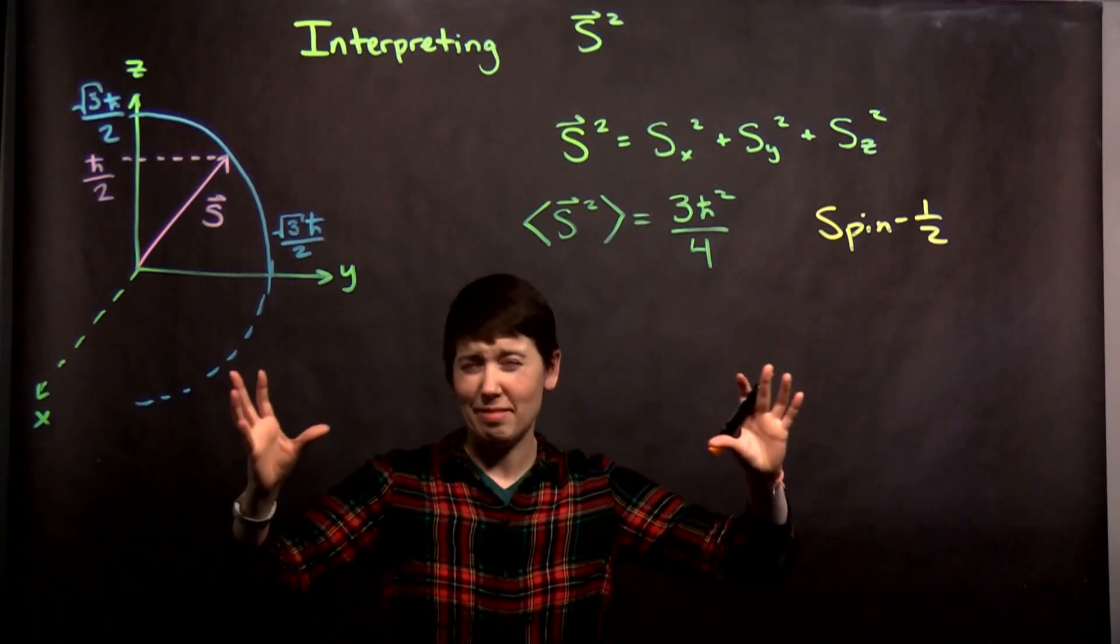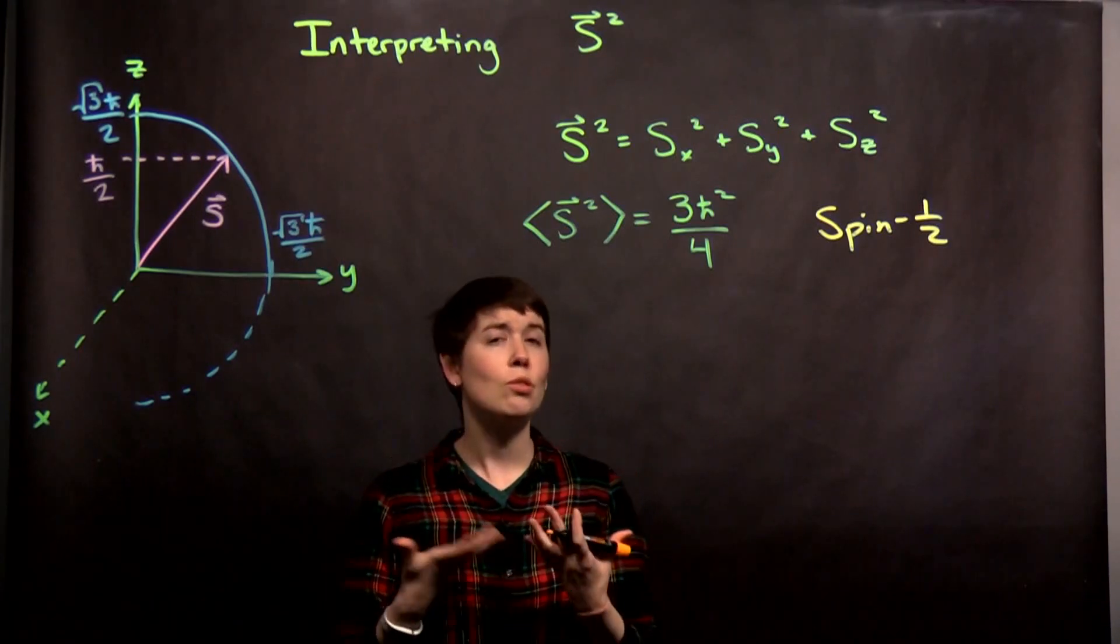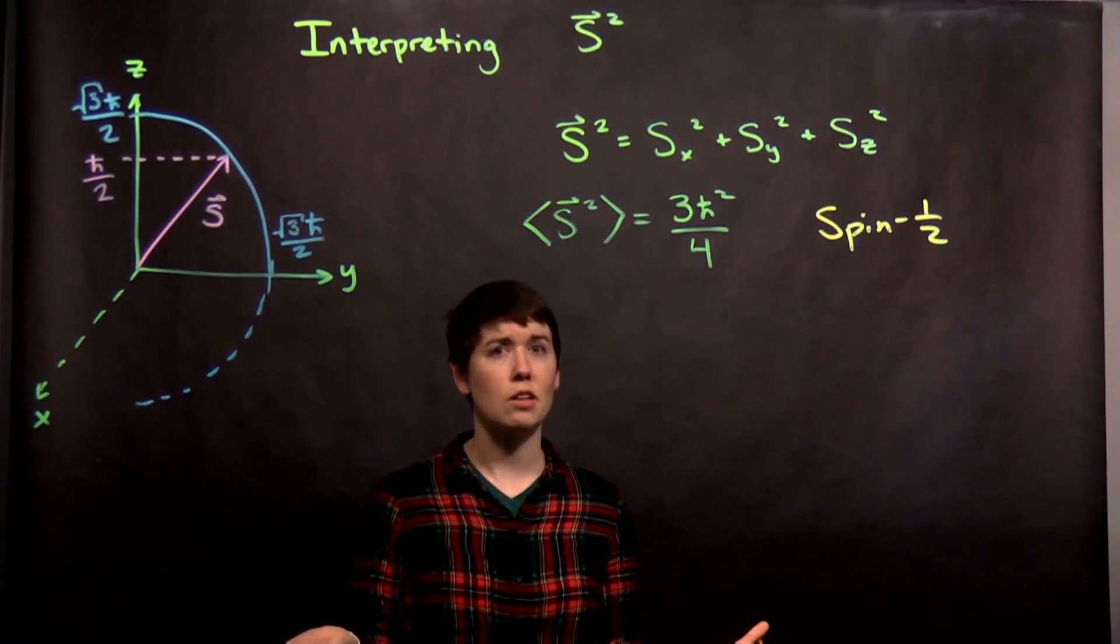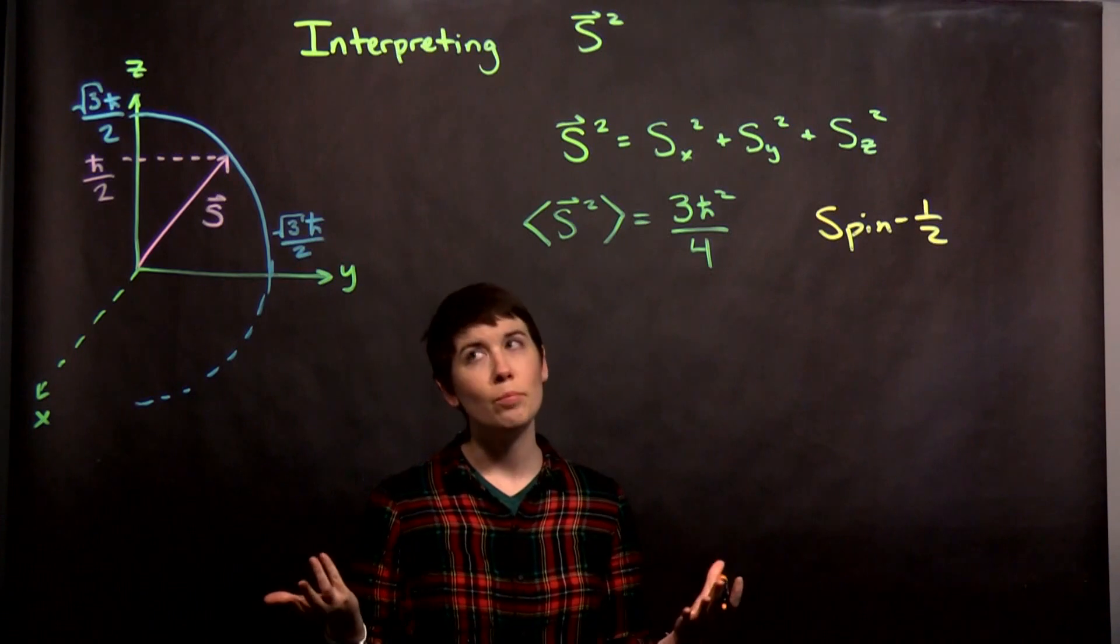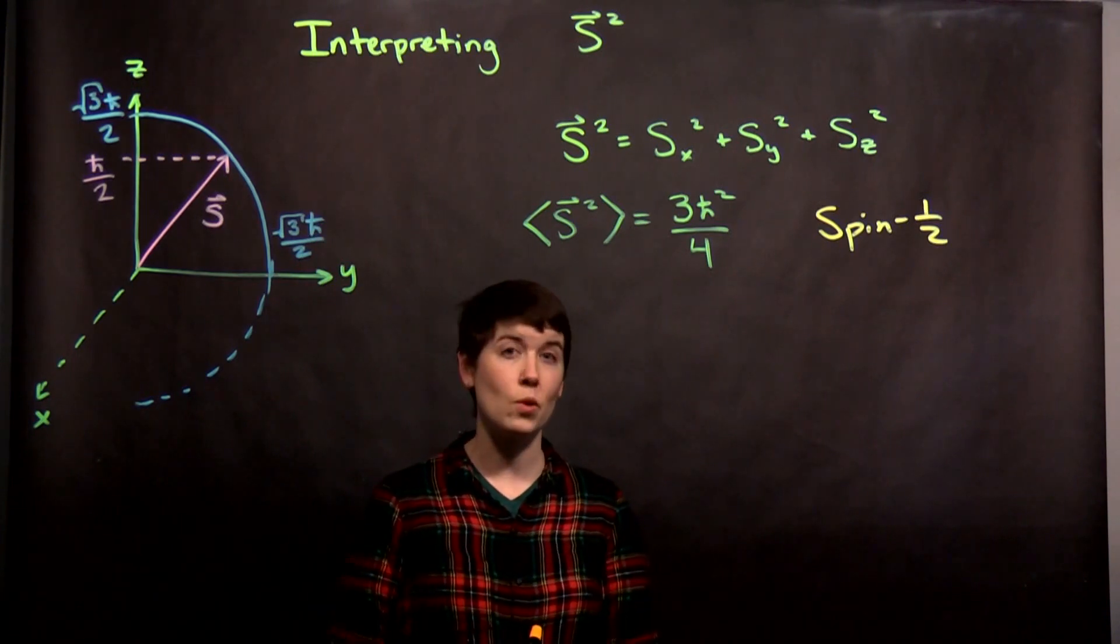But if it starts to make not a lot of sense, it's because classically we can know exactly which way our vectors point. But at least in this situation in quantum mechanics, we can't.